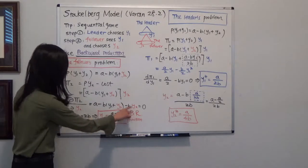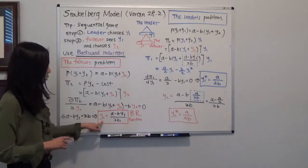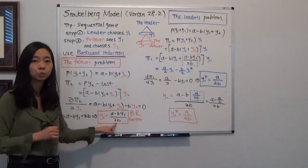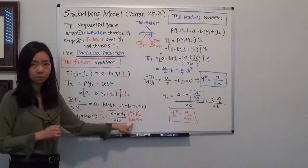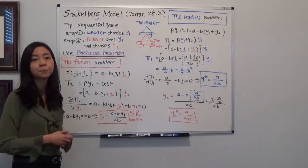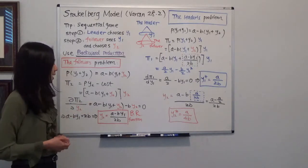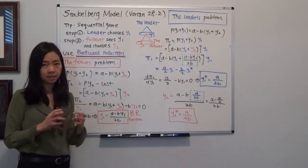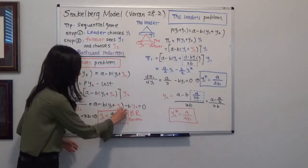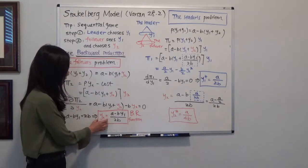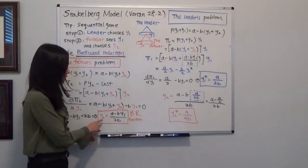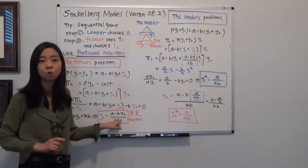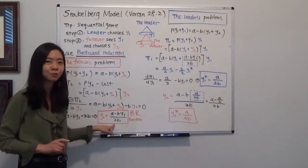So after we do that with some algebra, you'll be able to find that Y2 is equal to A minus B times Y1 divided by 2B. We call that best response function. BR stands for best response. So firm two is going to say, whatever firm one produces Y1 is going to be a number, and I'm going to plug in this Y1, this number into this function, and I'm going to know how much I am going to produce. So the amount that I'm going to produce depends on how much firm one is going to produce. So we call that best response function.